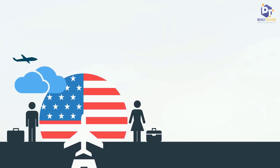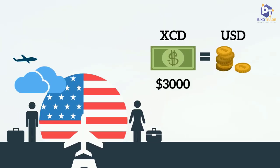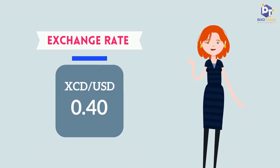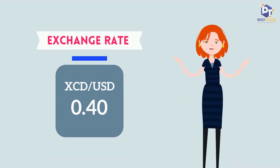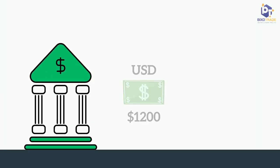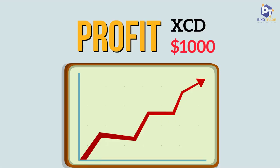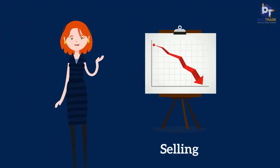For example, while you were on vacation in the United States, you traded 3000 Eastern Caribbean dollars for 1200 United States dollars but did not spend any. Upon returning home to the Caribbean, the exchange rate changed from 0.40 to 0.30. So when you go to the bank or the Cambio to exchange your 1200 United States dollars for Eastern Caribbean dollars, you'd be getting back 4000 Eastern Caribbean dollars — that's 1000 Eastern Caribbean dollars profit. This exchange is the transaction of selling.